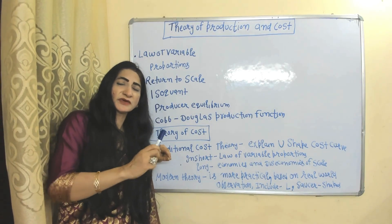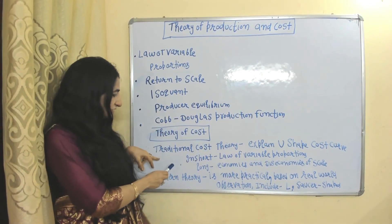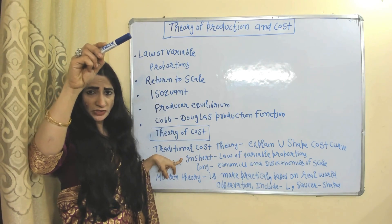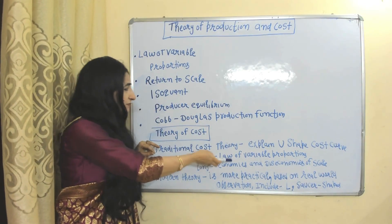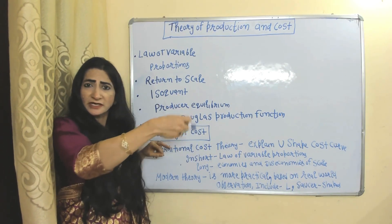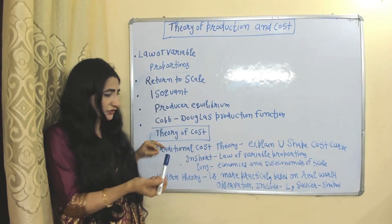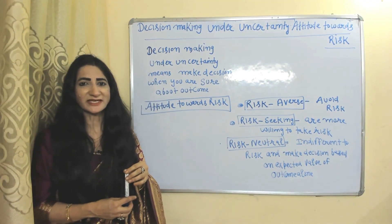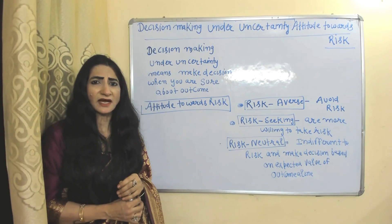Theory of cost is divided into two parts: traditional cost theory and modern cost theory. Traditional cost theory explains the U-shaped cost curve. In the short run it is based on the law of variable proportions, and in the long run it is based on returns to scale — or economies and diseconomies of scale. Modern cost theory is more practical, based on real-world observation, and includes L-shaped and saucer-shaped cost curves.